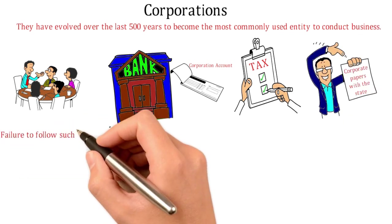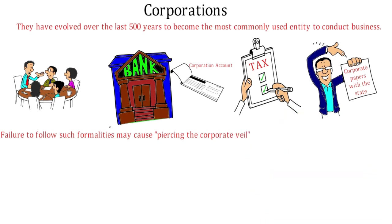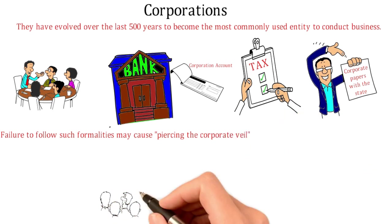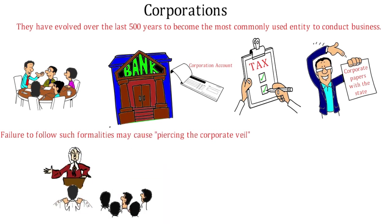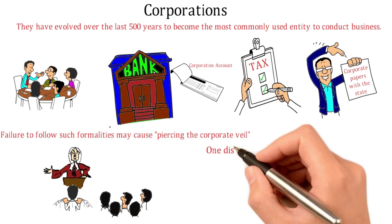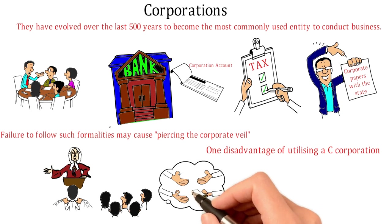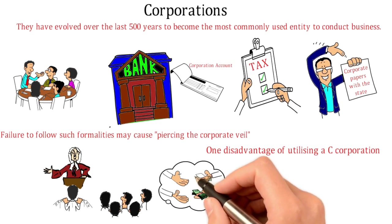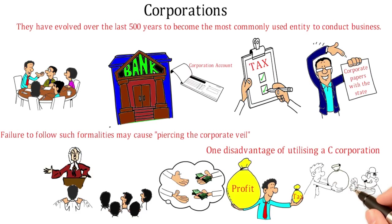Failure to follow such formalities may cause piercing the corporate veil — a legal maneuver in which the creditor tries to establish that the corporation failed to operate as a separate and distinct entity, and then the individuals involved are held personally liable. One disadvantage of utilizing a C corporation is that earnings may be taxed twice: once on the profit and again on the dividend paid to shareholders.